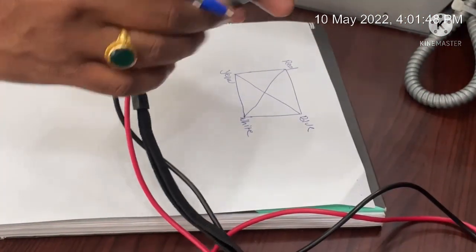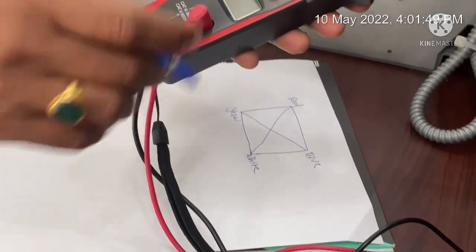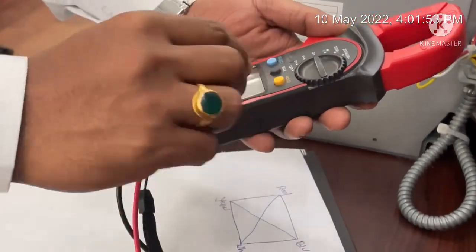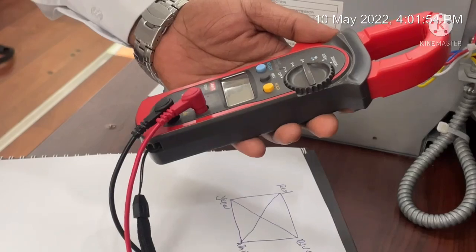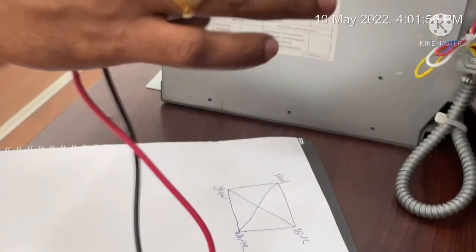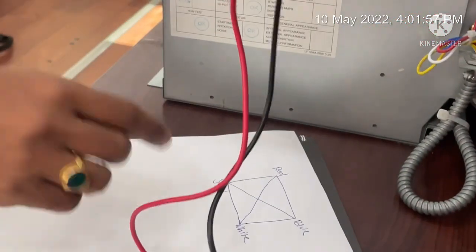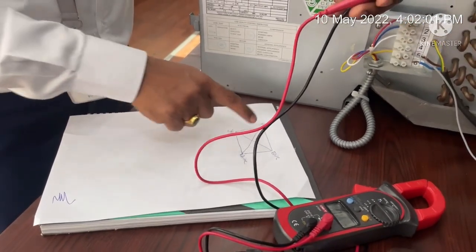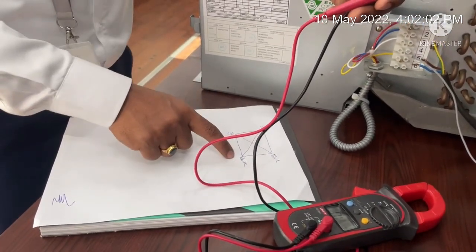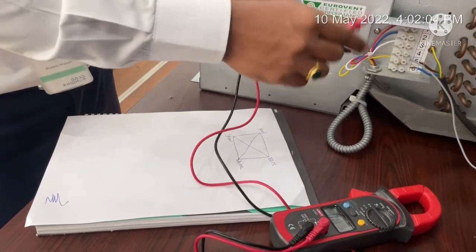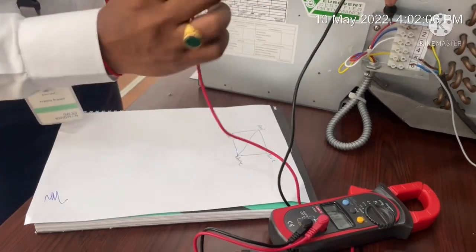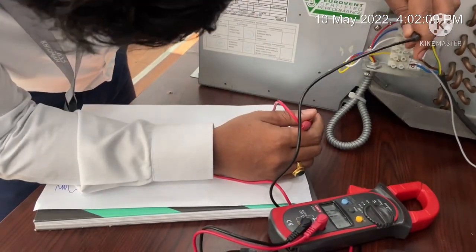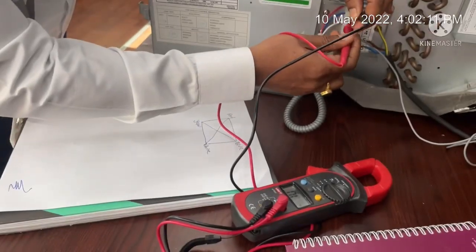This is the multimeter — you can see here. You will put it in resistance mode. Then I have to check the resistance from red to blue, blue to white, white to yellow, yellow to blue, and red to white. So let's check the resistance from each cable. Let's start from red to blue.